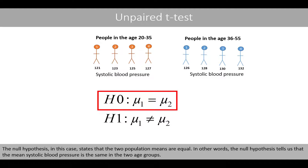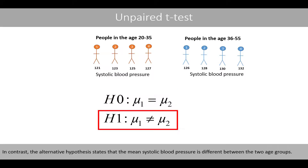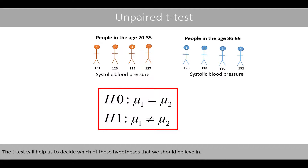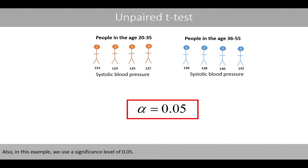The null hypothesis states that the two population means are equal — in other words, the mean systolic blood pressure is the same in the two age groups. In contrast, the alternative hypothesis states that the mean systolic blood pressure is different between the two age groups. The t-test will help us decide which of these hypotheses we should believe in. In this example, we use a significance level of 0.05.